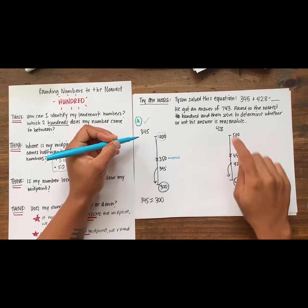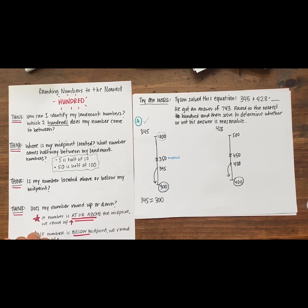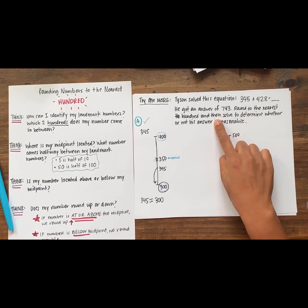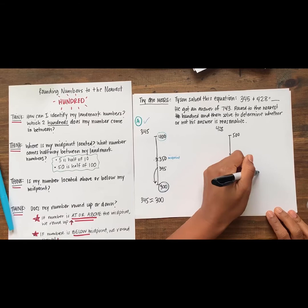Now that we've rounded 345 and 428, have we solved the problem? Evaluate. No, not yet. Our question asks us to round to the nearest hundred and then solve to determine whether or not Tyson's answer is reasonable. Let's try it.